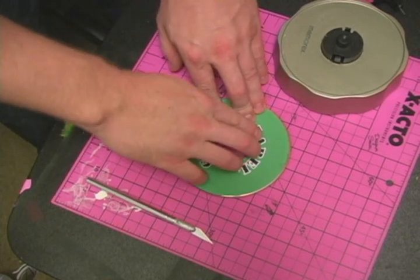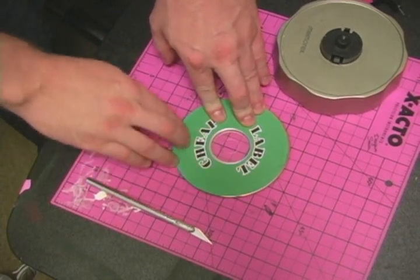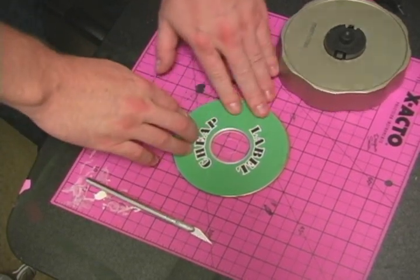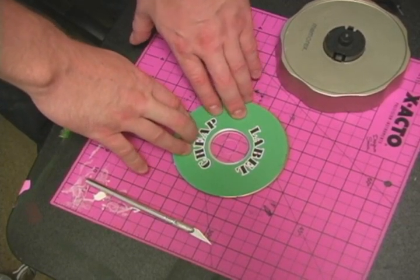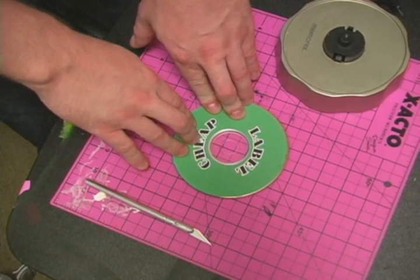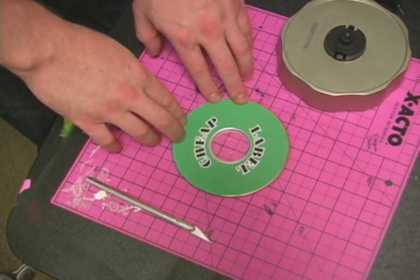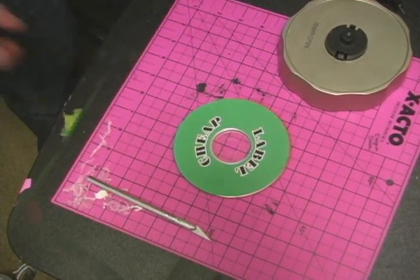If you apply that spray adhesive liberally like I said, this label's on there really good. Like I said, it's very tacky, and once it's on there, once it's dry, it's virtually impossible to get this label off of here.